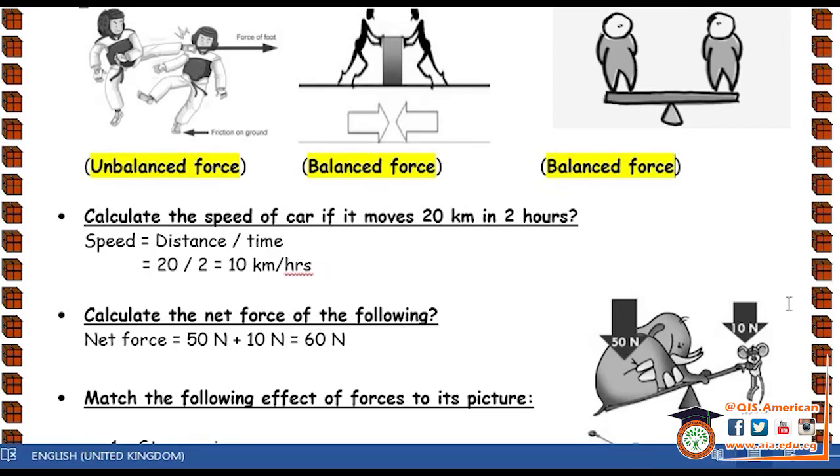Calculate the net force of the following. This is the following diagram. We said that the net force is the summation of all forces that acts on an object. So, what is the force here? 50 newton. And what is the force here? 10 newton. So, 50 plus 10 newton equals 60 newton. So, the net force here is 60 newton. As we said, the unit of measuring force is newton.